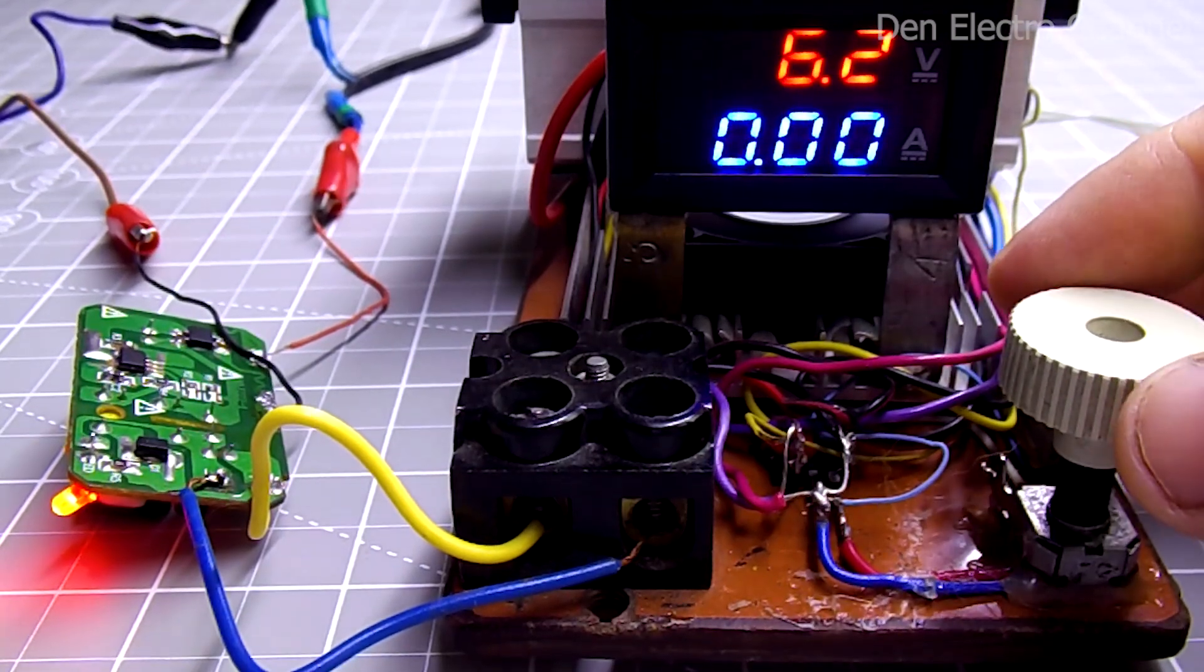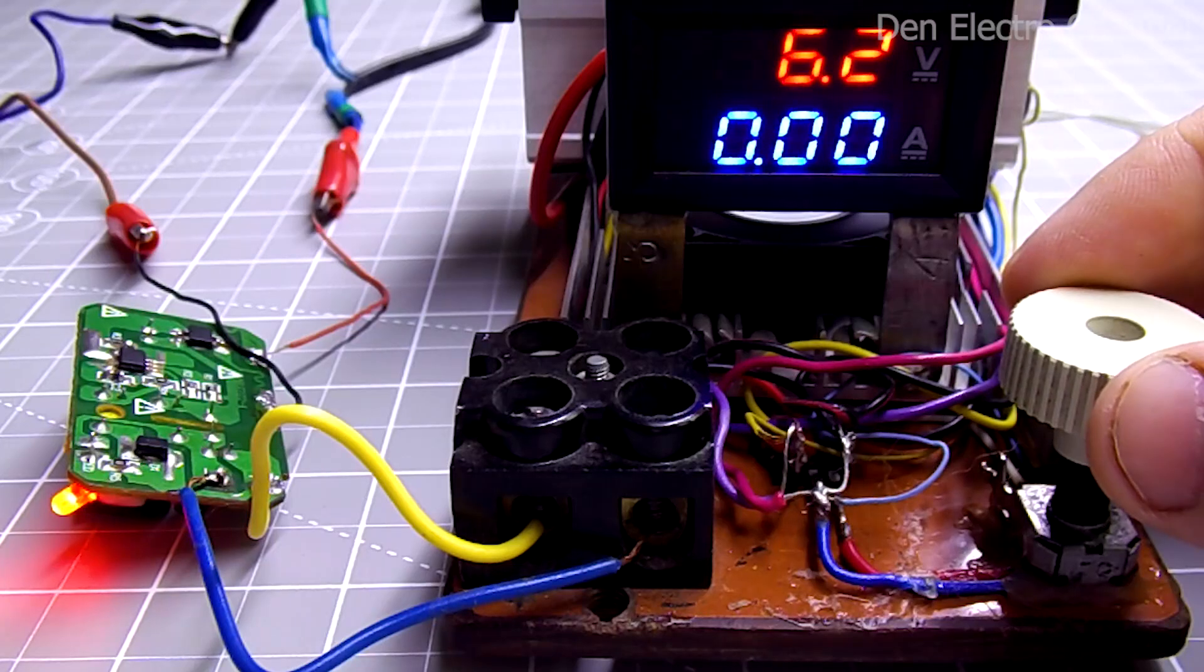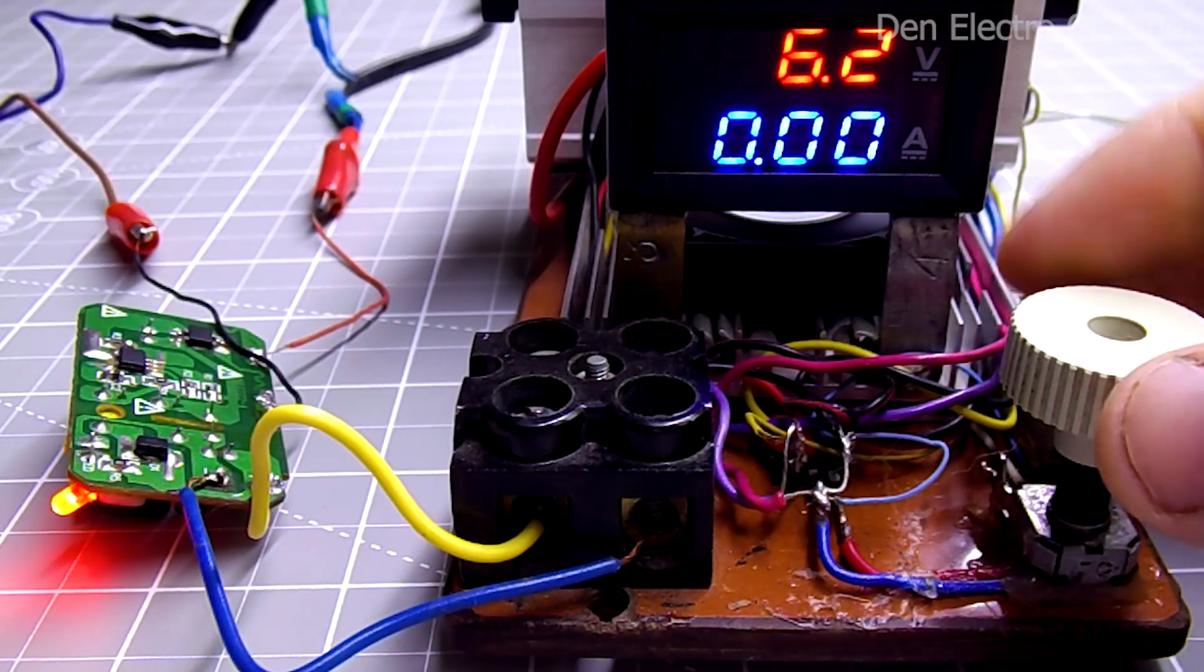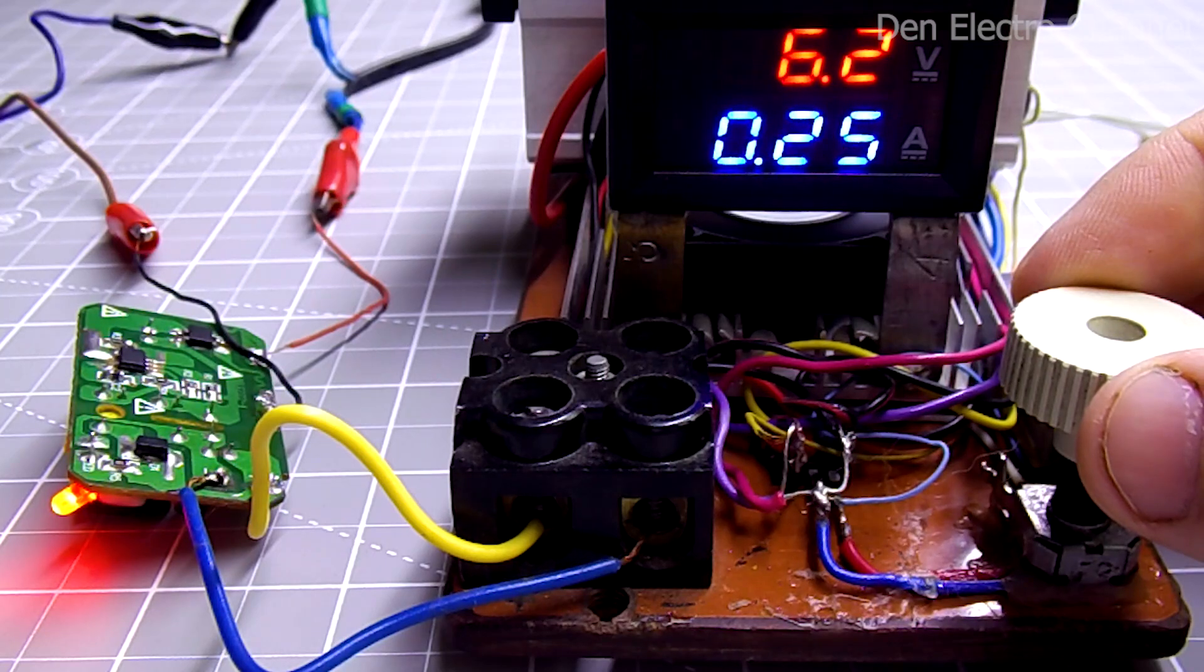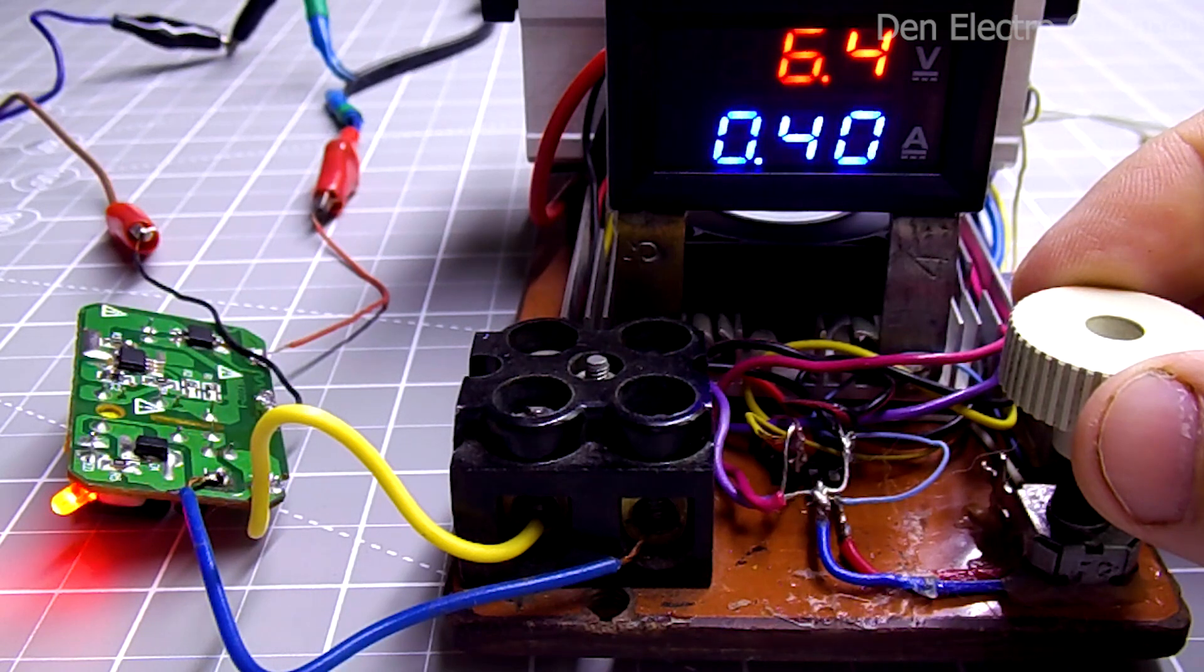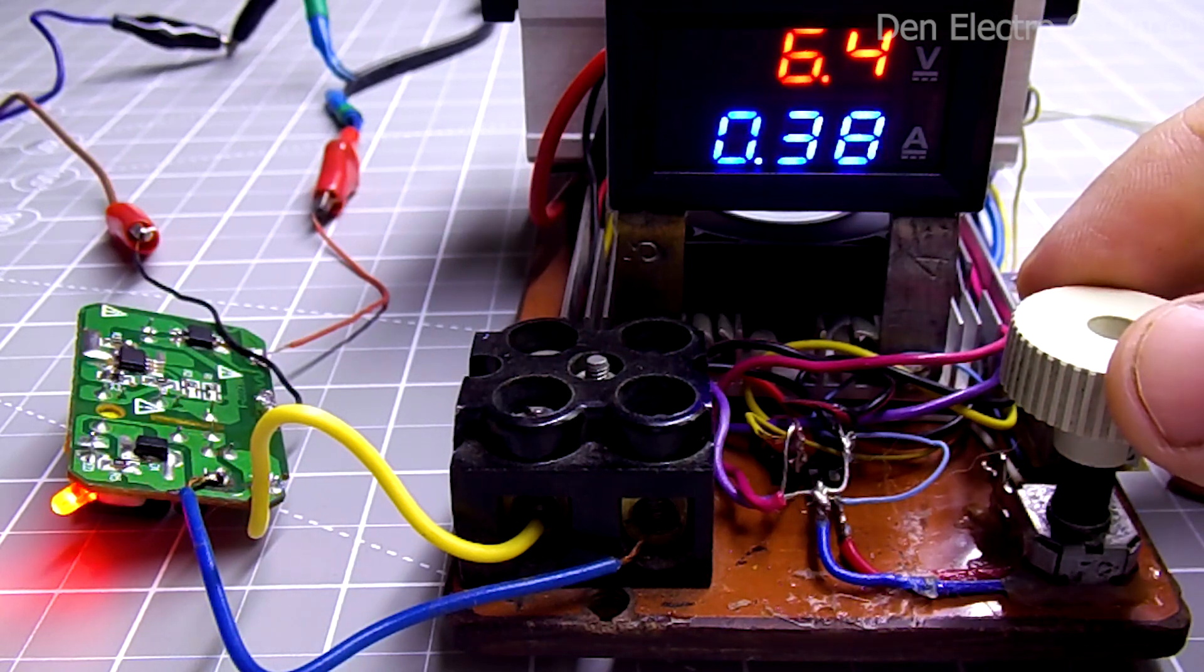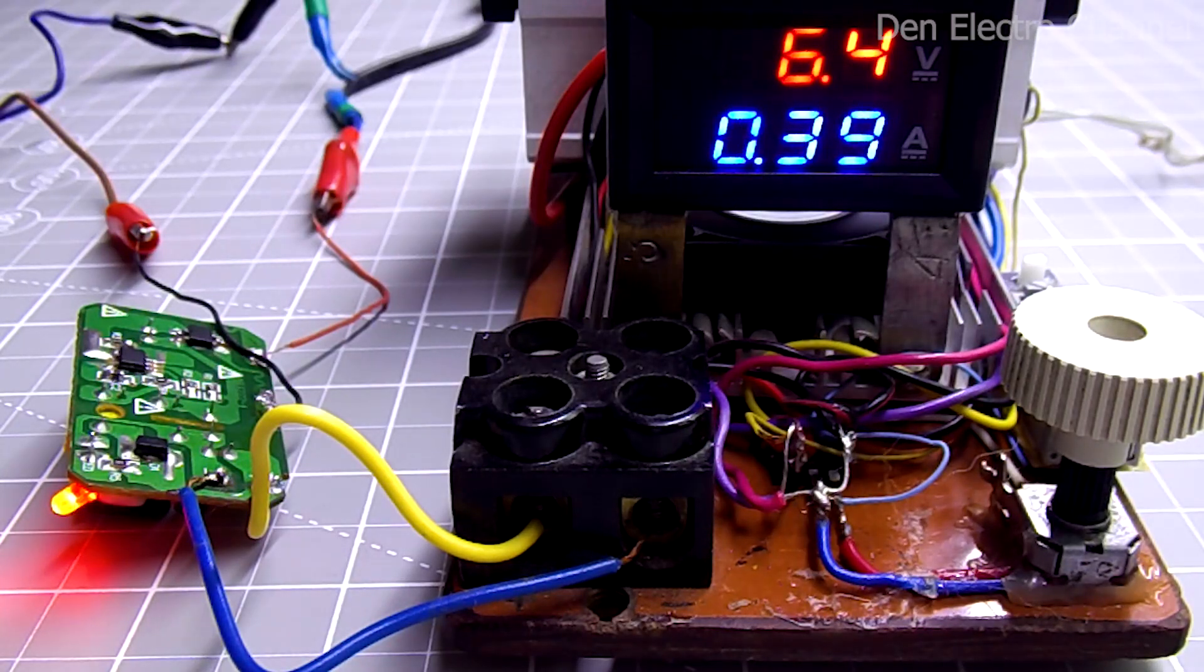Before disassembling the transformer, I decided to check the power supply and see how much power it can produce. For this I will use my electronic load. It is assembled on LM317 chips. If anyone is interested, the link to this video is in the description. It turned out that the maximum current that this power supply can produce is approximately 400 milliamperes. At the same time, the voltage increases to 6.4 volts. This is approximately 2.5 watts.